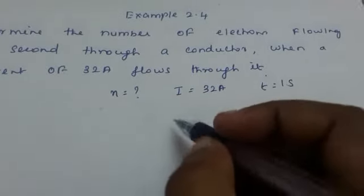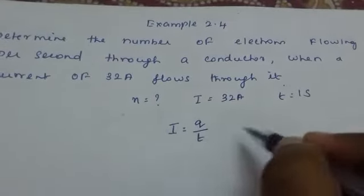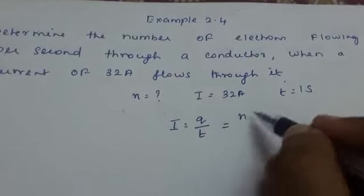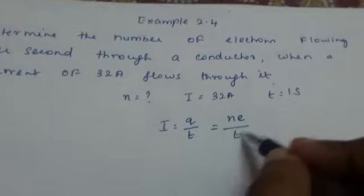Now we can go for finding it. So you know the formula for current: current is equal to charge by time. Now charge is not given. So what is charge? Charge is equal to number of electrons into elementary charge, so n into e by t.